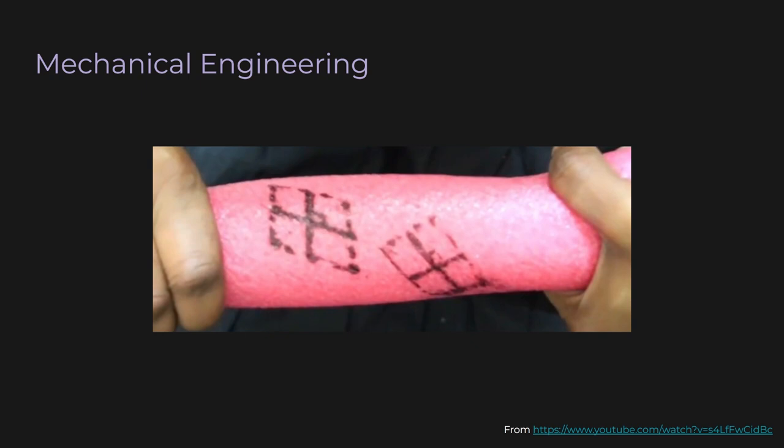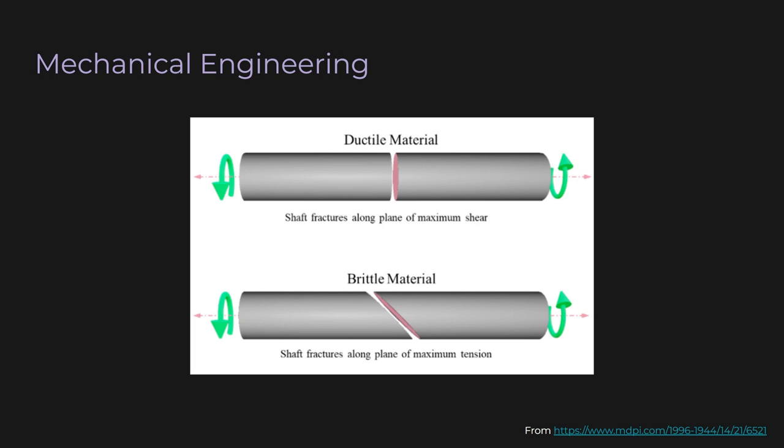The two lines bisecting the square on the right are the eigenvectors of the Cauchy stress tensor computed at the center of the square. The stress tensor will be different for different applied forces, locations, and materials. Even for the same torsion, the eigenvectors can be different for different materials. This is important because the way materials fail depends on these eigenvectors.